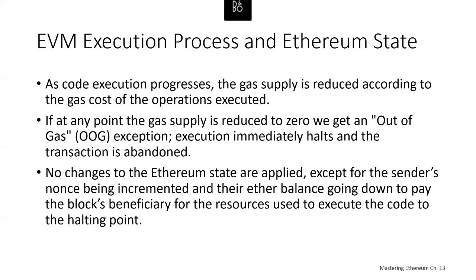A key variable is the gas supply for this execution, which is set to the amount of gas paid for by the sender at the start of the transaction. As code execution progresses, the gas supply is reduced according to the gas cost of the operations executed — for example, if you start with 100 and execute an operation costing 10, you go down to 90. If at any point the gas supply reaches zero, we get an out-of-gas exception and execution immediately halts and the transaction is abandoned. In this case, no changes to the Ethereum state are applied, except the sender's nonce is incremented and their Ether balance goes down to pay the winning miner for the resources used to execute the code up to the halting point.